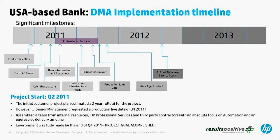Senior management had a tight goal and requested a production live date of Q4 2011. Since they started in Q2, that gave them basically six months — significantly less than originally planned. They worked with HP and HP partner professional services resources through that period. The bottom line is they went to production at the end of Q4, accomplished their goal, and started seeing significant business impacts almost immediately.